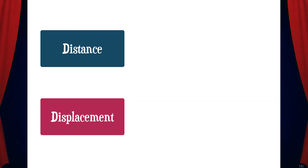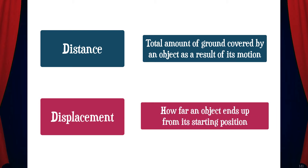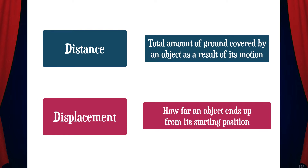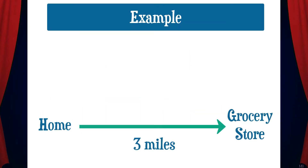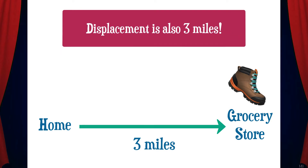Let's first discuss the difference between distance and displacement. Distance is the total amount of ground covered by an object as a result of its motion. Displacement, on the other hand, is how far an object ends up from its starting position. For example, let's suppose that the grocery store is 3 miles from your home and you walk there. The distance you've traveled is 3 miles, and your displacement is also 3 miles since you're now 3 miles from your starting position.